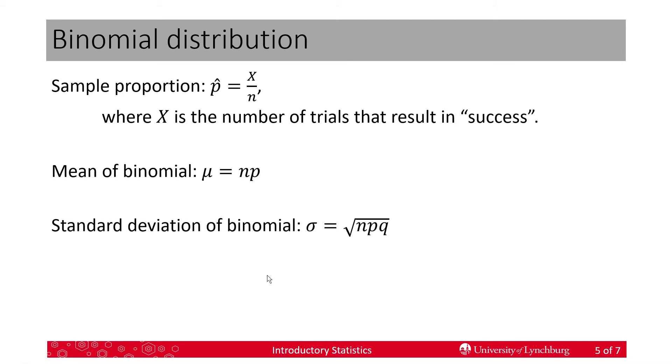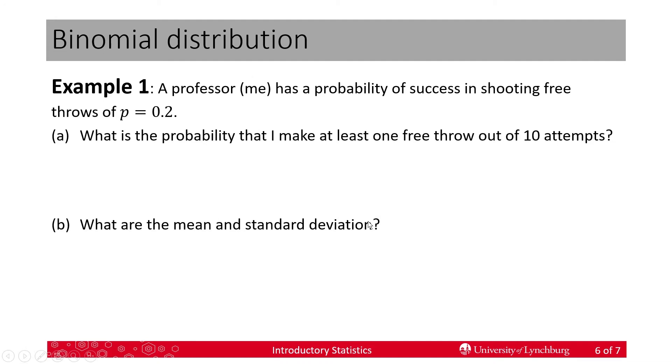Now let's talk about the sample proportion, p hat. p hat is equal to x over n, but here again, x is equal to the number of trials that result in success or the number of successes in the sample or population. The mean of the whole population binomial distribution is mu equal to n times p. And the standard deviation of the binomial distribution, sigma, is equal to n times p times q and take the square root. So those are pretty easy.